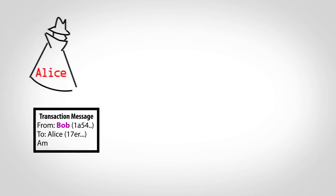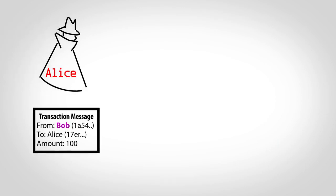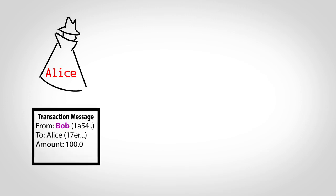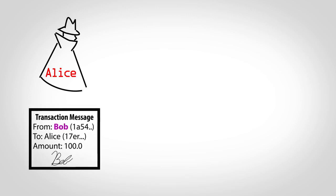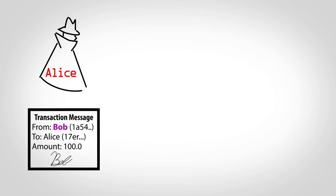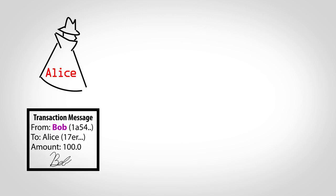If sending money is as simple as creating a message with some account numbers, what's to stop a thief, Alice, from spending Bob's money by using his account number? Like a pen and paper check, Bitcoin requires a kind of signature to prove that the sender is the real owner of an account, but is based on math rather than handwriting.